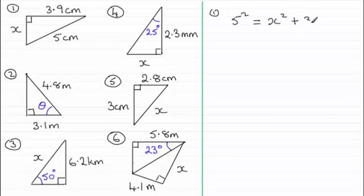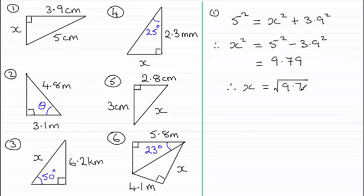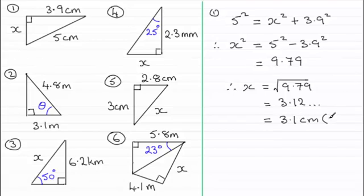So that's x² + 3.9². Taking away 3.9² from both sides gives x² = 5² − 3.9². Working this out on your calculator gives x² = 9.79. Taking the square root of both sides: x = √9.79. It won't be plus or minus because a length can only be positive. That equals 3.12..., so to one decimal place it's 3.1 centimetres.